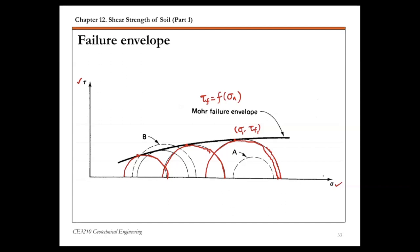A couple of things to note about this failure envelope. First, the failure envelope passes through the critical combinations of shear and normal stress, and these critical points are not at the top of each Mohr circle — they are close to the top, but not at the top. This means material fails due to the combination of normal and shear stress, not due to the maximum shear stress alone. Second, the shape of Mohr's failure envelope is actually a curved line, not a straight line.